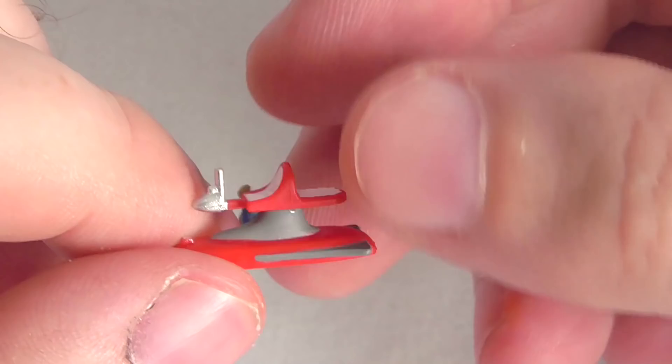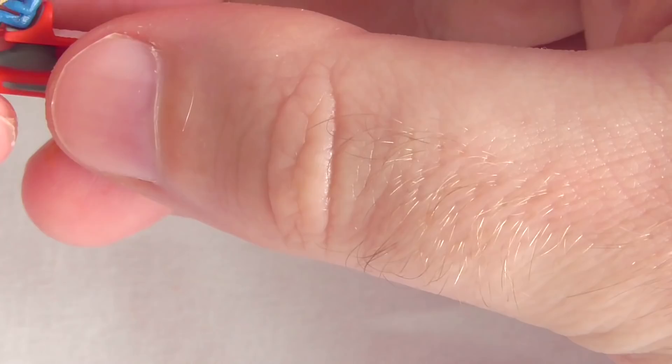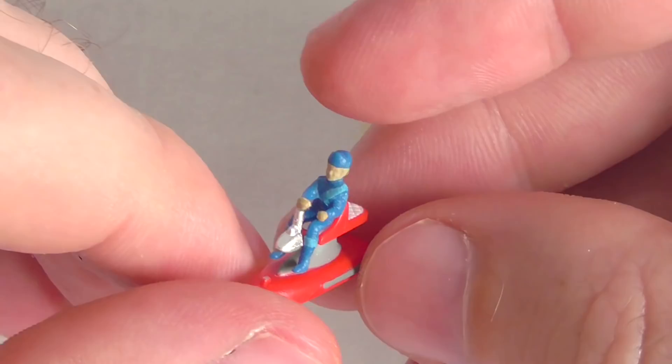If you want to glue Scott in, I mean you can. There's nothing stopping you. It is your model. But it does just sits nicely on there, so you don't have to. But yeah, looks great. So now that that little pod vehicle is done, let's move on to the bigger pod vehicle that we're starting this week.